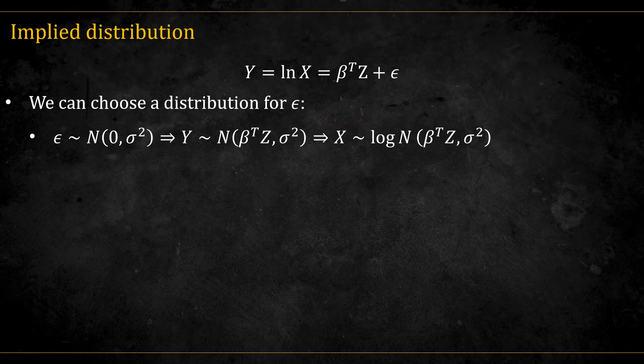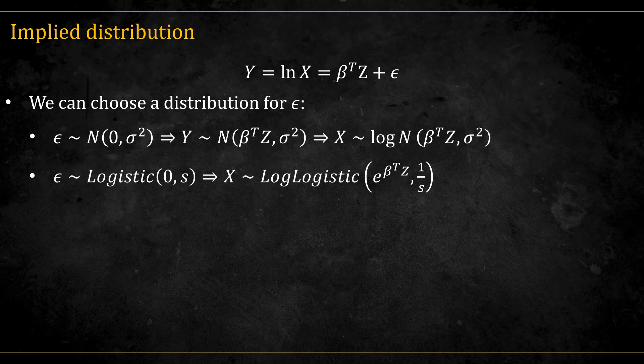The choice of the distribution for epsilon determines also the distribution for x, the time to event. If we take epsilon to be normal, then x is log normal. If epsilon is logistic, then x is log logistic. If epsilon is Gumbel, then x is Weibull. And as Weibull includes also the exponential distribution, if the parameter b is 1, then x is exponential.